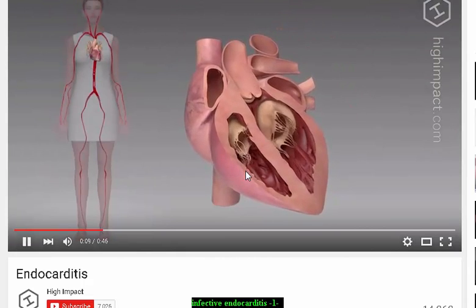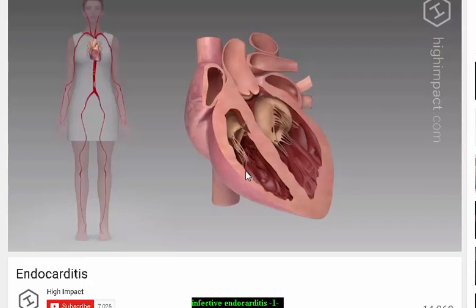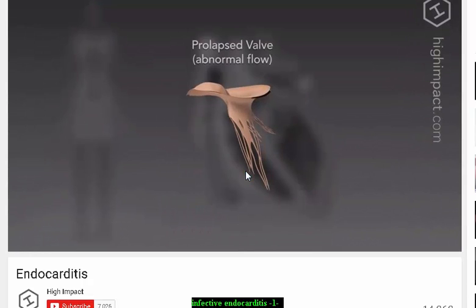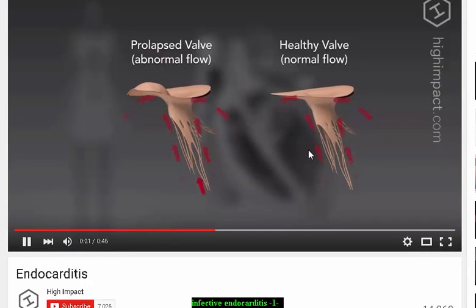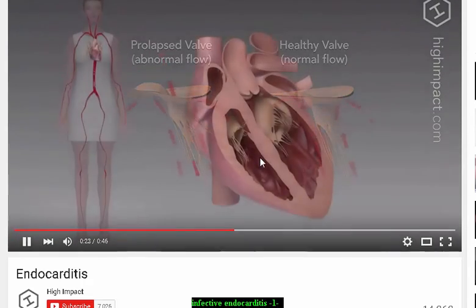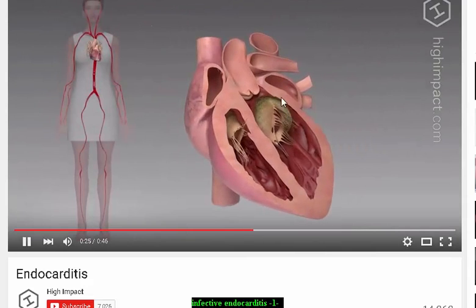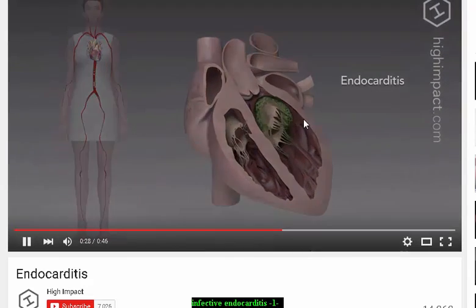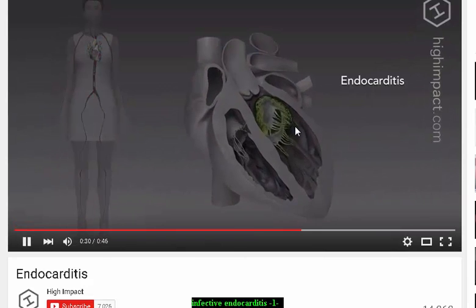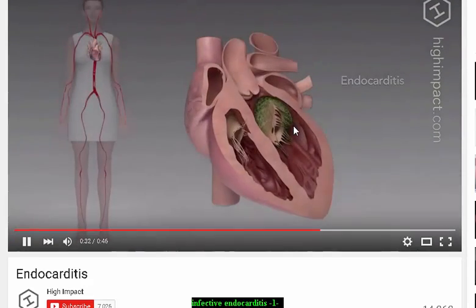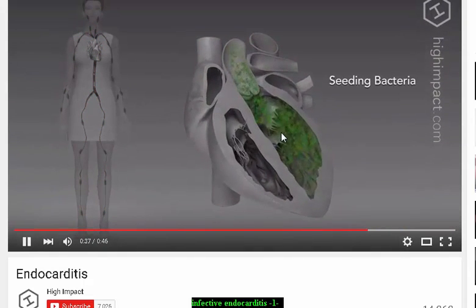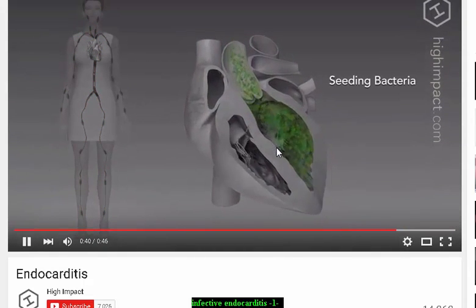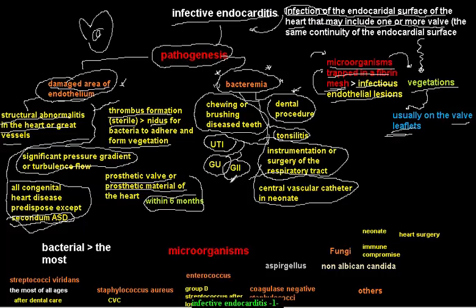Abnormal blood flow — turbulent or overflow — may predispose to endocarditis. In the video, the green structure represents the vegetation. It may travel to other tissues of the heart and into the bloodstream, causing the complications of endocarditis.